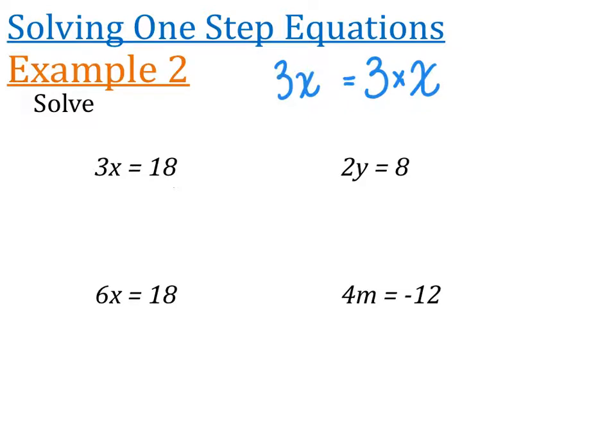So we're looking for 3 times by something to be 18. We want to do the inverse or the opposite of times, which is divide. So we're going to go ahead and divide both sides by 3. So we can write divide by 3 and divide by 3. x is equal to 18 divided by 3, which is 6. And then again, I can go back and check 3 times by 6 is 18. Let's look at the next example. It's the exact same idea. It says 2y is equal to 8. That really means 2 times by y is equal to 8. So I want to divide both sides by 2. And then I end up with y is equal to 8 divided by 2, which is 4. And then I can check, is 2 times 4 8? Yes, it is.